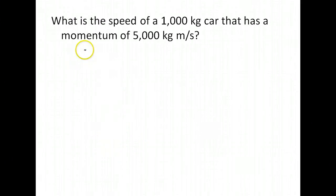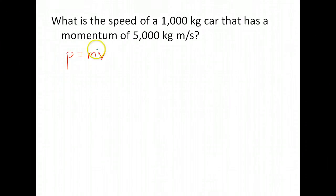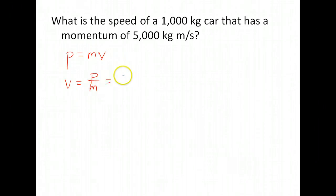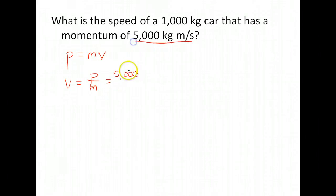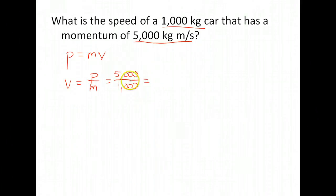What is the speed of a 1,000 kilogram car that has a momentum of 5,000 kilogram meters per second? We start with our equation: momentum equals mass times velocity, then rearrange to solve for velocity. Velocity equals momentum over mass, so we plug in 5,000 kilogram meters per second divided by 1,000 kilograms, and that gives us 5 meters per second.